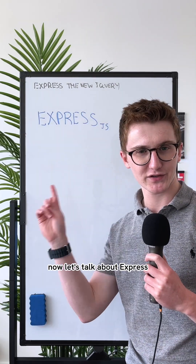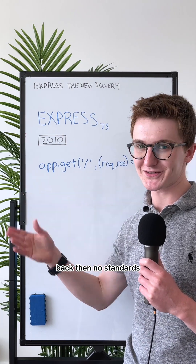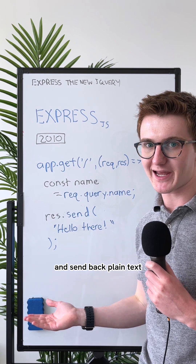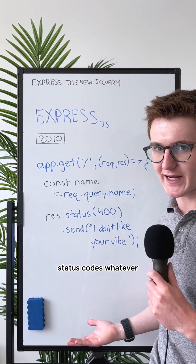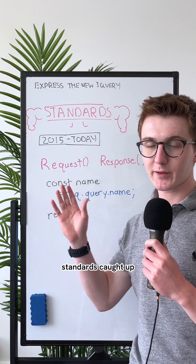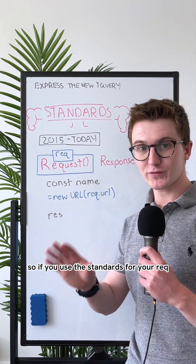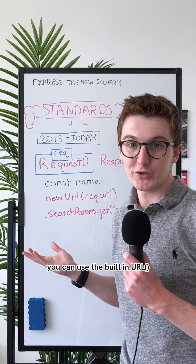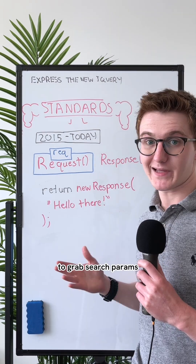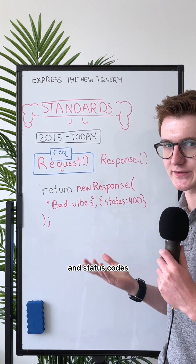Now let's talk about Express — probably your intro to Node. Back then, there were no standards, so we needed a way to handle requests, get query params, and send back plain text, JSON, status codes, whatever. But once again, standards caught up. The browser and Node.js now come with built-in request and response objects, so you can use the built-in URL to grab search params and the built-in response for plain text, JSON fields, and status codes.